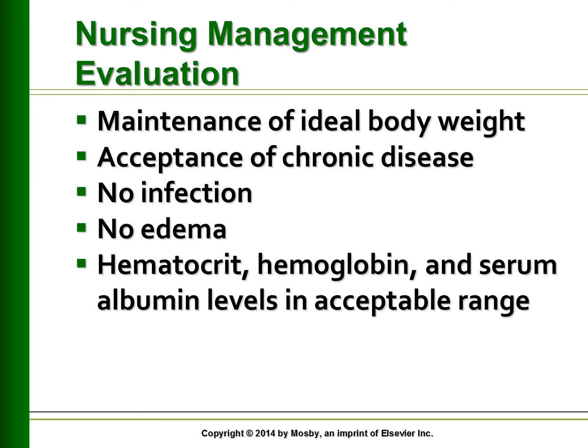Hyperacute rejection occurs within the first 24 hours. Acute rejection occurs after 24 hours, and its manifestations include sudden oliguria, fever, hypertension, fluid retention, enlarged and tender kidney, lethargy, elevated serum creatinine, BUN, and potassium levels. For acute rejection, immunosuppressant drugs will have to be increased.